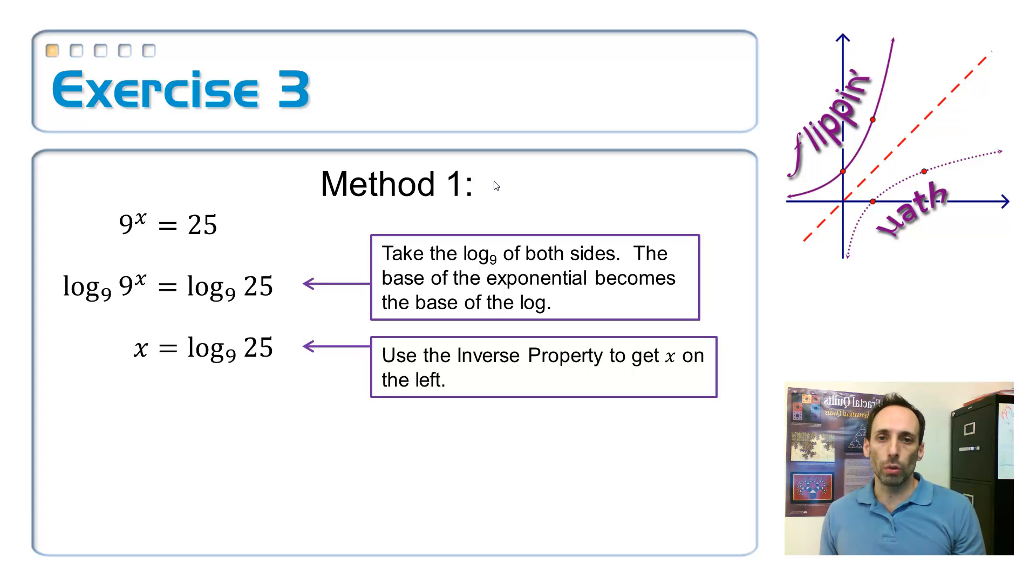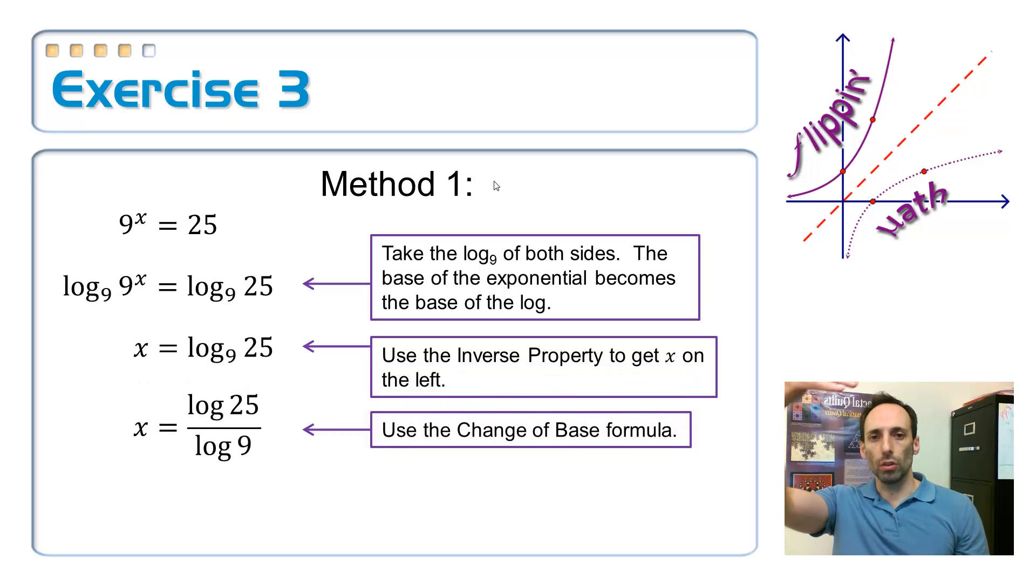But, I don't. I only have base 10 or natural log base e. So, then I'm going to have to use a change of base formula. So, I could write that as the log of 25 over the log of 9. Remember, the original base always goes on the bottom. So, here we are at approximately 1.465. So, there's the first method.